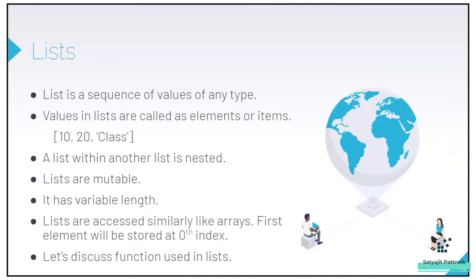Today's session will be dedicated to lists. A list is a sequence of values of any type — the values in lists are called elements or items. Lists can hold integer values, float values, and multiple data types as well. A list within a list is also possible and it is called a nested list. Lists are mutable, meaning we can edit the data. Lists have a variable length and are accessed similarly to arrays — the first element is stored at the zeroth index.